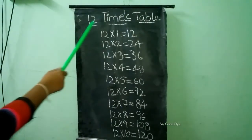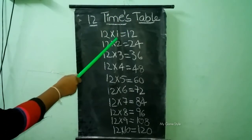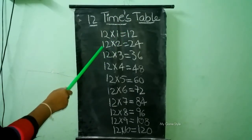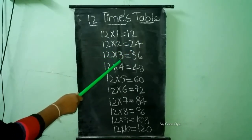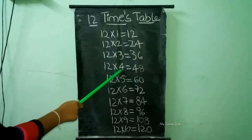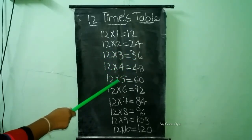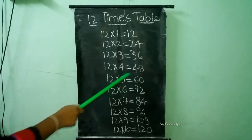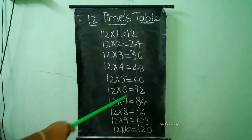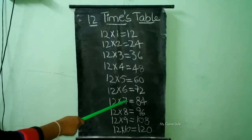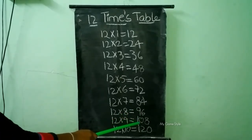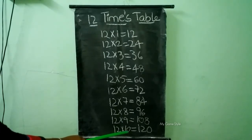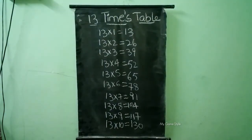12 times table. 12 times 1 is equal to 12. 12 times 2 is equal to 24. 12 times 3 is equal to 36. 12 times 4 is equal to 48. 12 times 5 is equal to 60. 12 times 6 is equal to 72. 12 times 7 is equal to 84. 12 times 8 is equal to 96. 12 times 9 is equal to 108. 12 times 10 is equal to 120.